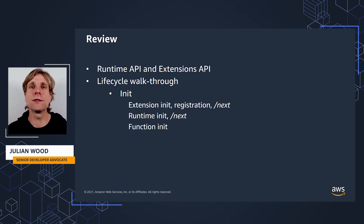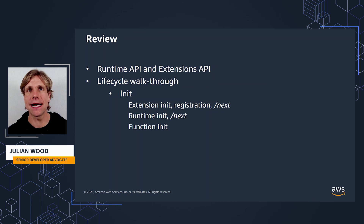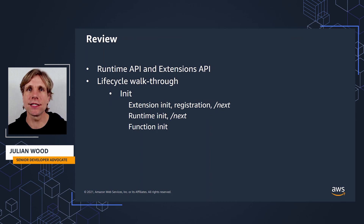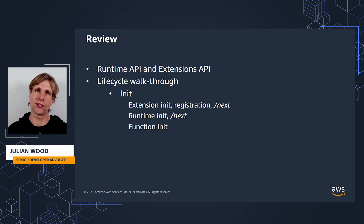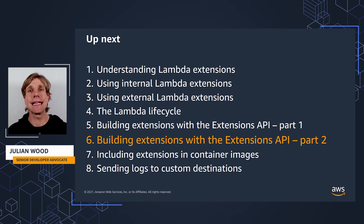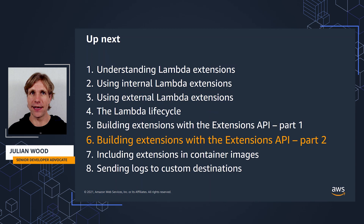To review, this was part one of the super deep dive into how to use the Runtime and Extensions API to build your own extensions. I went through the Lambda lifecycle in detail, showing the changes so far to init, and showed the API calls and how the runtime, extensions, and function interact. In the next video, I'm going to continue with building extensions using the API, looking at the invoke and shutdown phases.